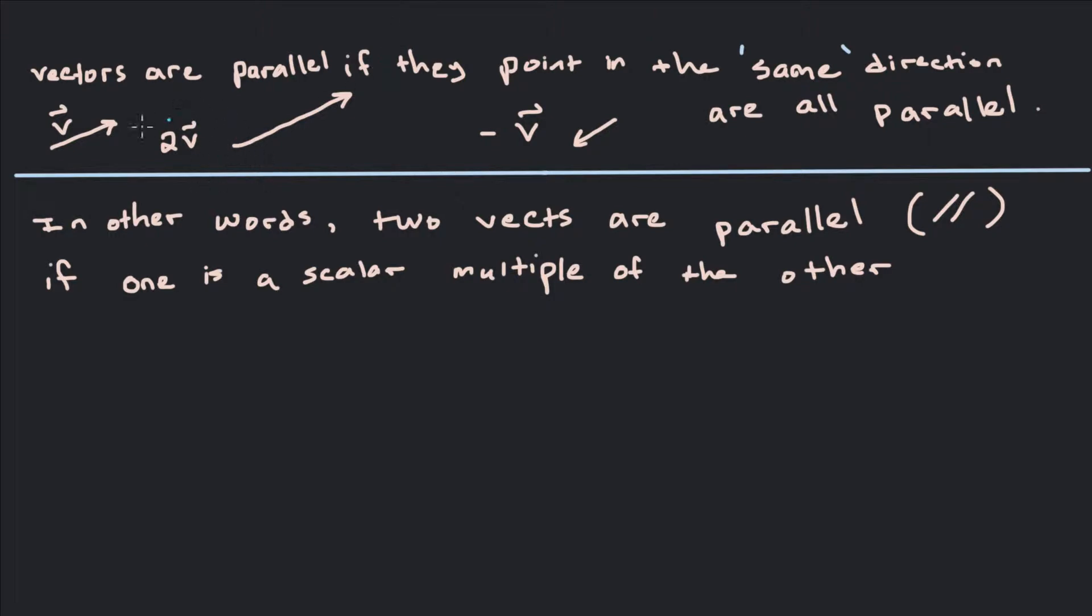First of all, we need to know what it means for vectors to be parallel. Let's say we got the vector v here. Essentially it means they point either in the same direction or exactly the opposite direction of each other. For example, 2 times v would just be taking v and multiplying by 2 the magnitude. So the length is multiplied by 2 but the direction doesn't change. Negative v on the other hand would change the direction but it would just point in the exact opposite direction. So they would still be parallel but they would just be pointing in exact opposite direction.